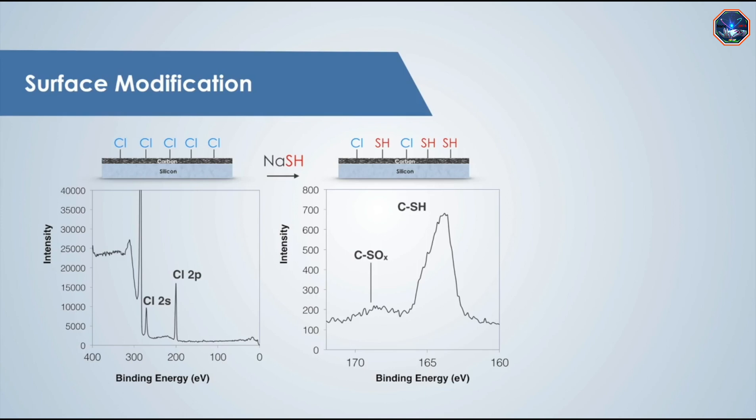The larger peak at lower binding energies is due to unoxidized sulfur atoms, while the smaller peak at a higher binding energy is due to sulfur atoms that have been oxidized.